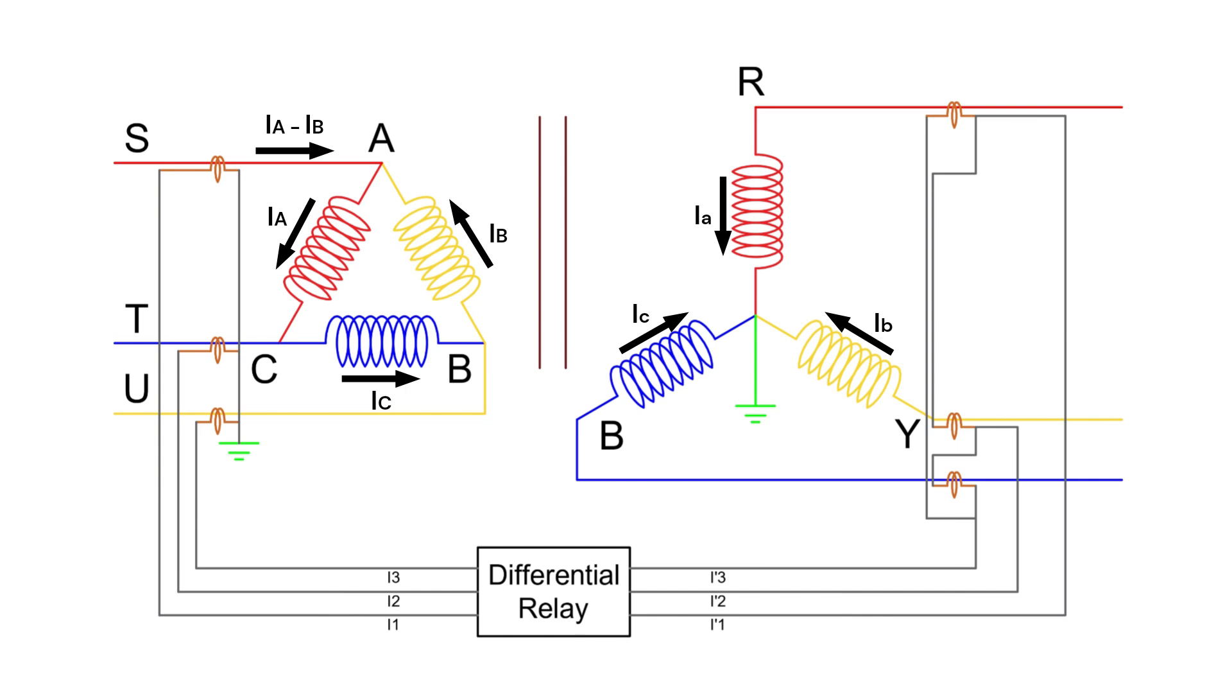Similarly, on the star side, the CTs are connected in delta to correct the phase shift. Another benefit of this delta connection is that in case of a single line-to-ground fault, the zero-sequence current component will circulate within the delta loop, preventing it from reaching the relay.